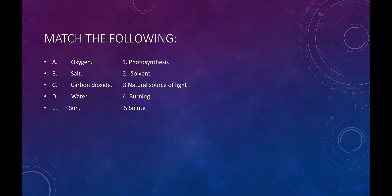And in Column B, the following items are given: Photosynthesis, Solvent, Natural source of light, Burning, and Solute. We have to match these.